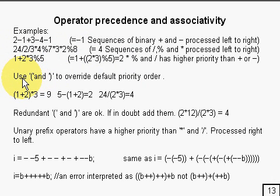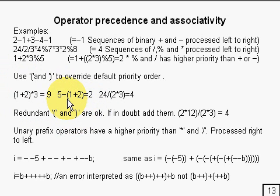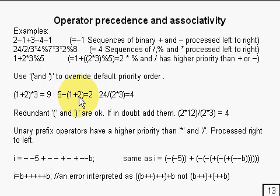If you want to override the default priority, you can use left and right brackets. For example, instead of 1 plus 2 times 3, which would be 1 plus 6, it becomes 1 plus 2, which is 3, times 3, which is 9. Similarly, you can subtract 1 plus 2 — subtracting 3 from 5 giving 2 — rather than subtracting 1 and adding on 2.